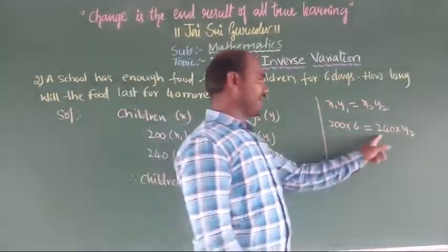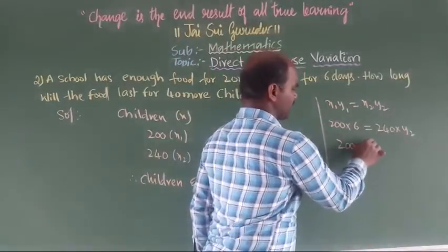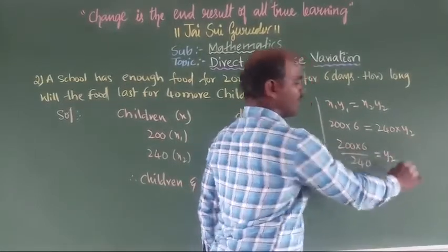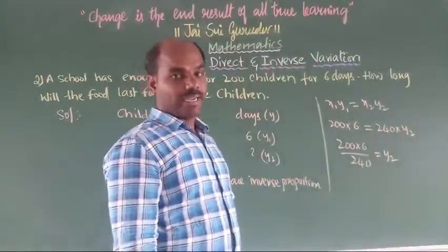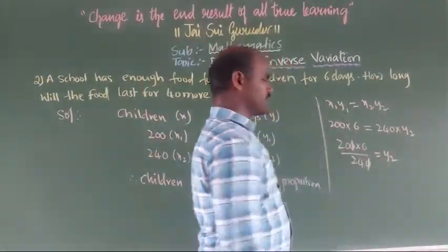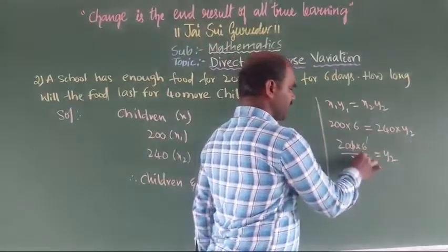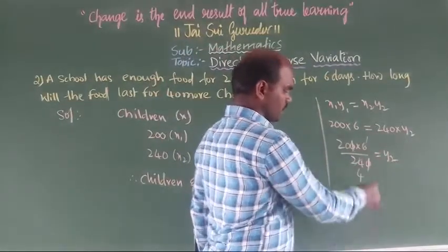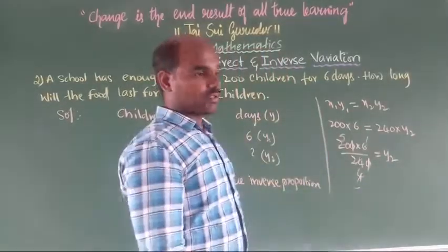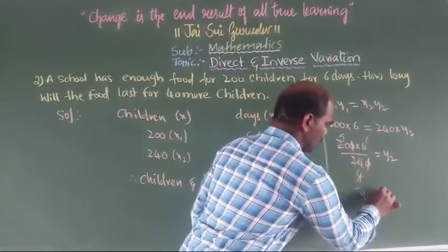Based on that, 200 into 6 divided by 240 equals y2. The zeros cancel: 6 divided by 4 gives 5 divided by... then 4 into 5... y2 equals 5.